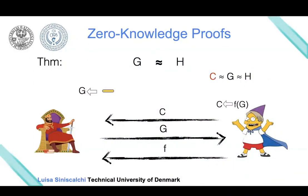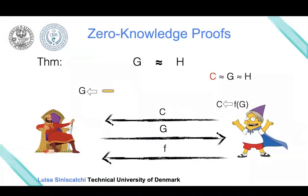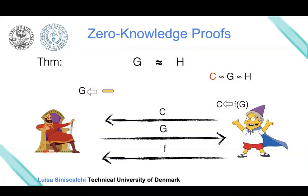This is still a proof. For this protocol, we want completeness and soundness to hold. Completeness is when the theorem is true and the prover is behaving honestly—we want the verifier to always accept. This is exactly the case, because if the two graphs are isomorphic, it doesn't matter if the verifier chooses G or H: the prover can always find the permutation to explain the connection between the chosen graph and C.